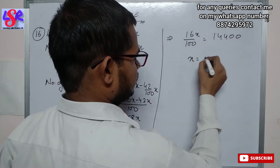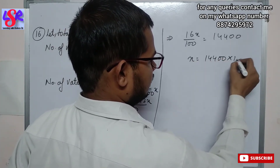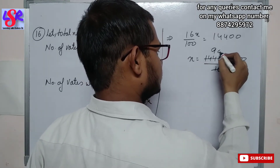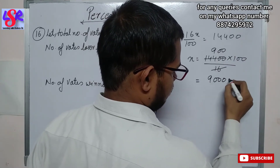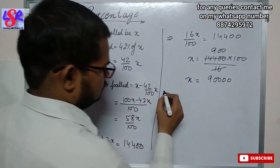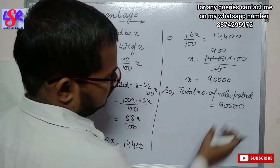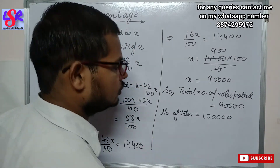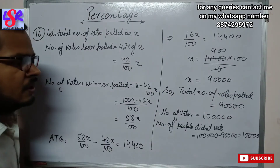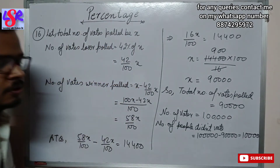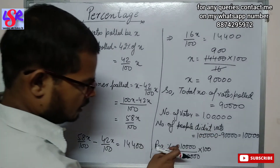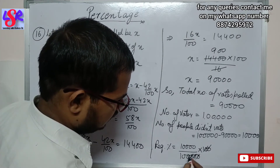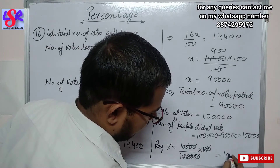So x equals 14400 into 100 upon 16. This equals 90000. So total number of votes polled equals 90000. The number of eligible voters is 1 lakh, so people who didn't vote equals 1,00,000 minus 90,000, that is 10000. The percentage of people who didn't vote equals 10000 upon 100000 into 100, which gives 10% as the answer.